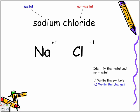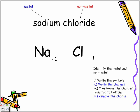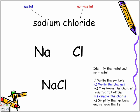Step three of the crossover rule is pretty much where the name comes from — crossover the charges from the top to the bottom. So watch now how the charges move. The positive one moved down and crossed over. Step number four, we're going to remove the charges; we no longer need the negatives and positives. And step number five, we're going to simplify the numbers — treat it like a ratio and reduce to lowest terms. One-to-one is already reduced, so we remove the ones. The formula for sodium chloride becomes NaCl.